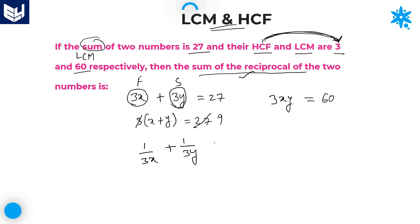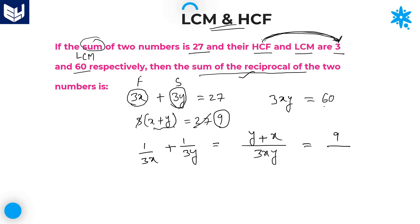1/3x + 1/3y — taking LCM of 3x and 3y, which is 3xy, gives us (y + x) / 3xy. We already found x + y = 9 and 3xy = 60. Substituting: 9/60. Simplifying by cancelling 3, the sum of the reciprocals is equal to 3/20. That is the answer for this question.